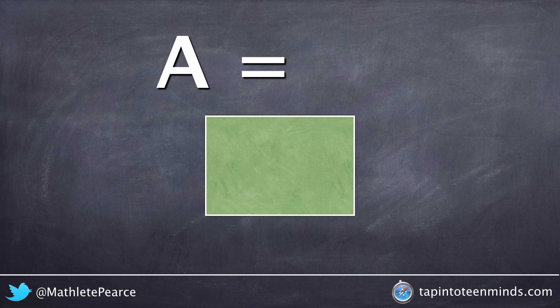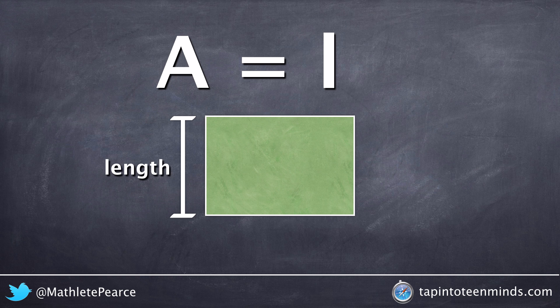So first off, for the length, we can really pick any one of these sides, either the two vertical sides or the two horizontal sides. In this case, I'm going to look at the two vertical sides and I'm going to call them my length. This leaves us with our two horizontal sides, which we will call our width.